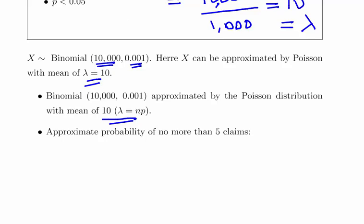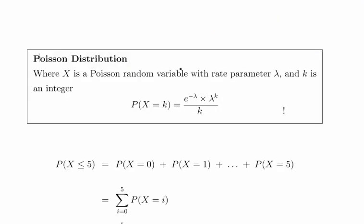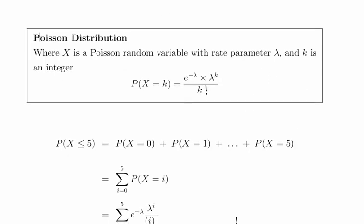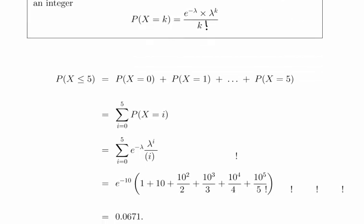What we have to do is approximate the probability of no more than five claims. We're going to use the Poisson mass function: probability of X equals k equals e to the minus lambda times lambda to the k over k factorial.